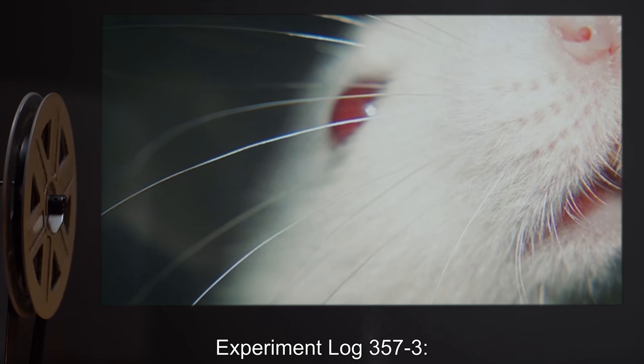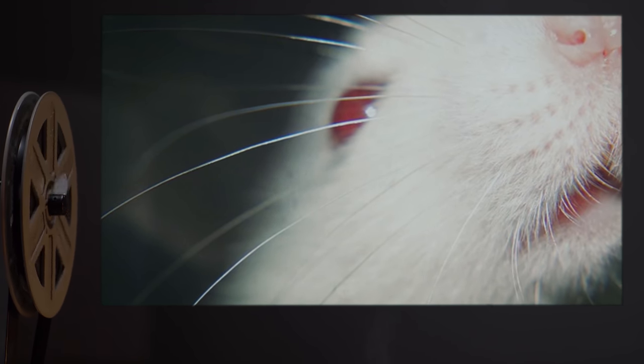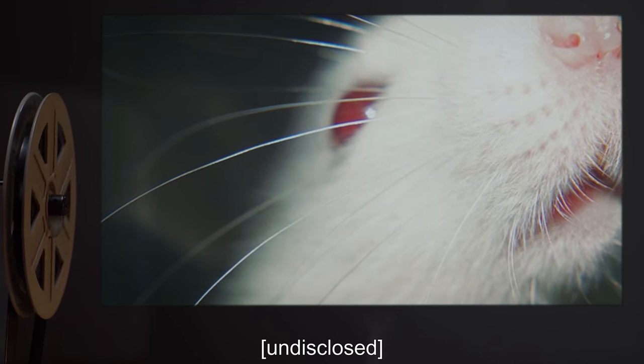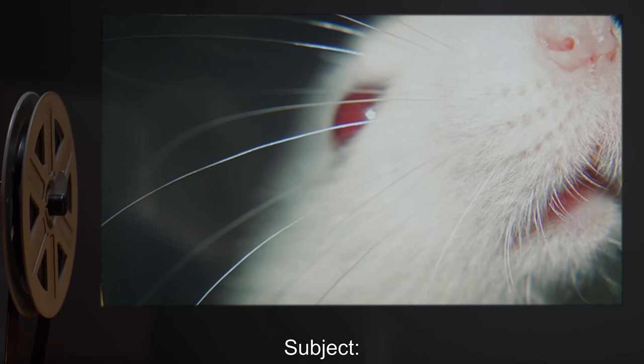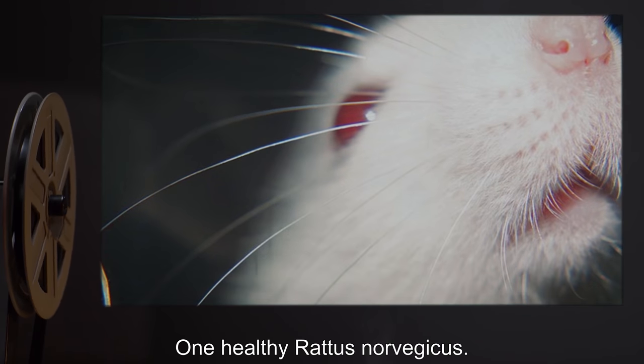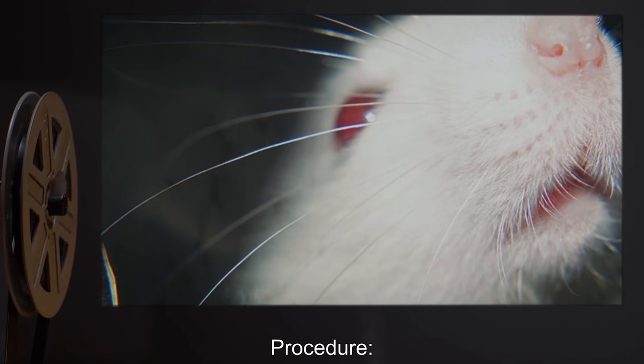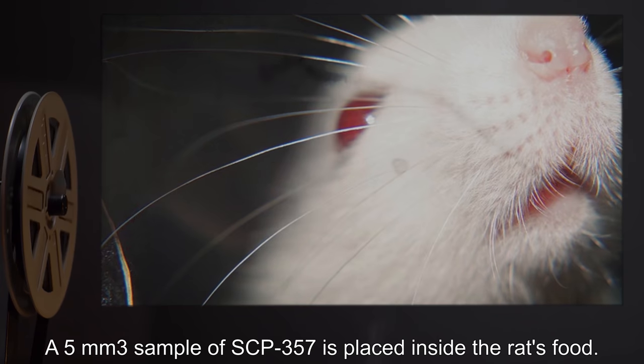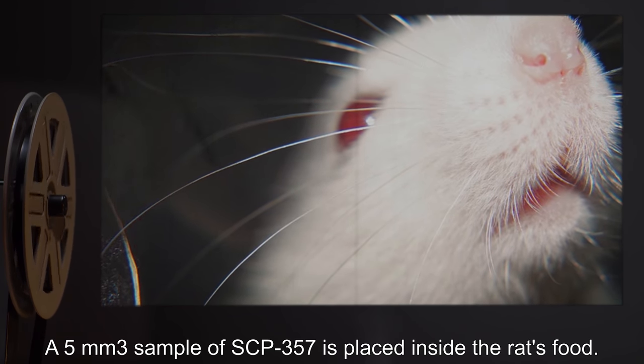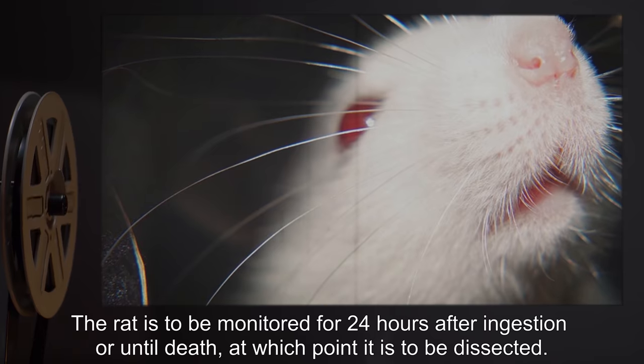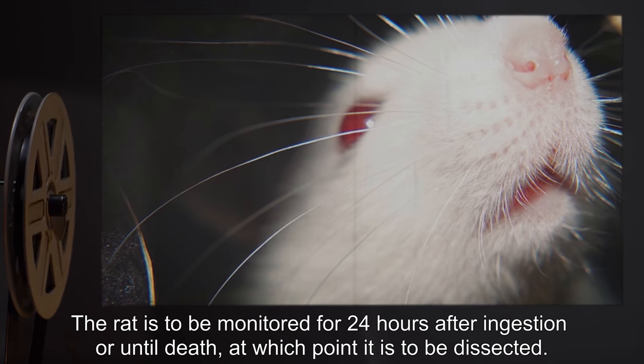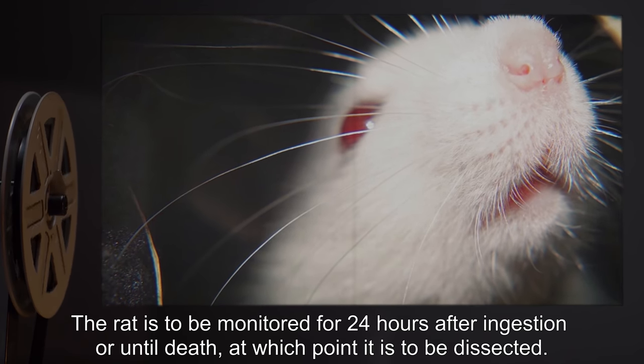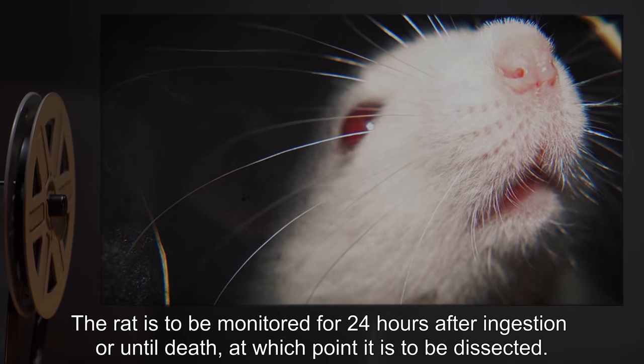Experiment Log 357-3. Date: Undisclosed. Subject: One healthy Rattus norvegicus. Procedure: A 5-millimeter cubed sample of SCP-357 is placed inside the rat's food. The rat is to be monitored for 24 hours after ingestion, or until death, at which point it is to be dissected.